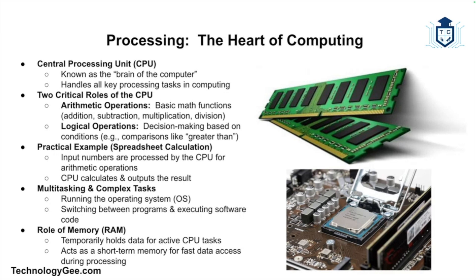The CPU performs two critical roles. The first is arithmetic operations, which include basic mathematical functions like addition, subtraction, multiplication, and division. Then there are logical operations — the CPU makes decisions based on conditions, such as determining whether one value is greater than another. It executes instructions that are part of the software, breaking them down into basic commands the computer can understand.